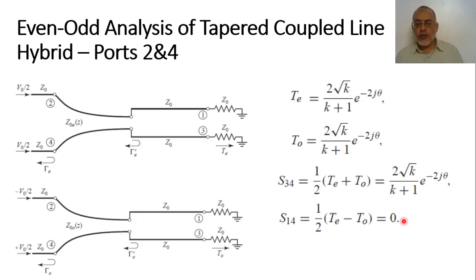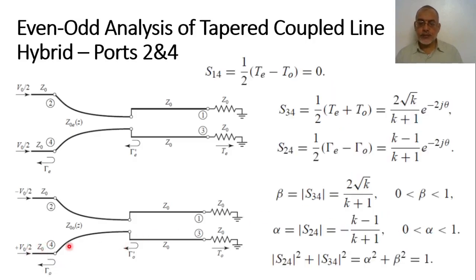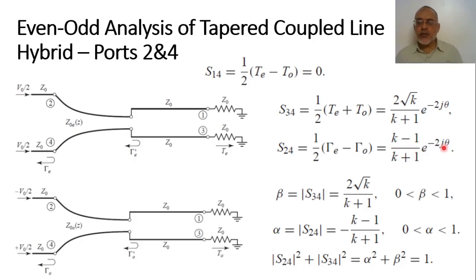We now have the complete fourth column of the scattering matrix: S₁₄ = 0, S₃₄ = [2√K/(K+1)]·e^(−j2θ), S₂₄ = [(K−1)/(K+1)]·e^(−j2θ), and S₄₄ = 0.